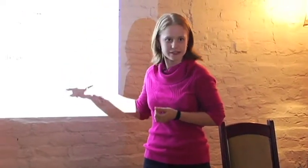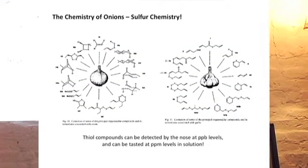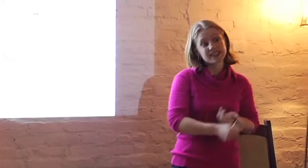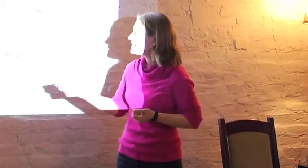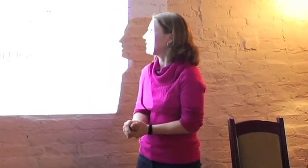And normally, sulfur smells terrible. Thio compounds, which are compounds that have the sulfur and then hydrogen attached to whatever else, can be detected by the nose at part per billion levels. And they really stink. So these are things that come from, like, skunks. And the stuff that is put in your gas that you can smell when it's leaking. And they can be tasted at part per million levels in solution. So there's really not very much of them in the onion and the garlic.